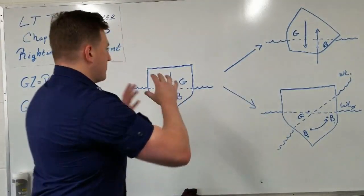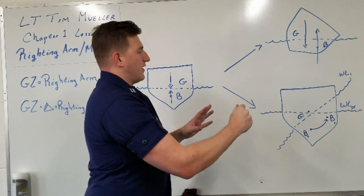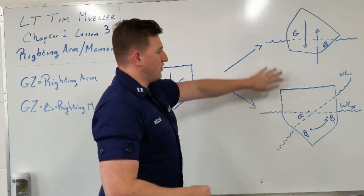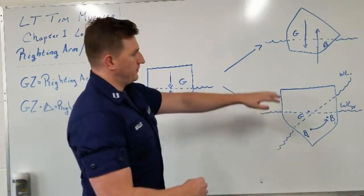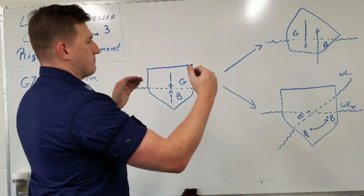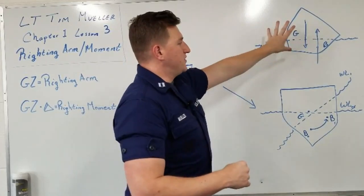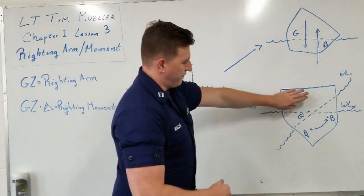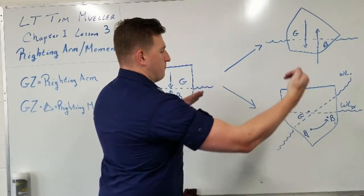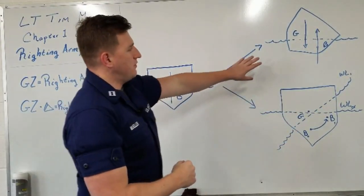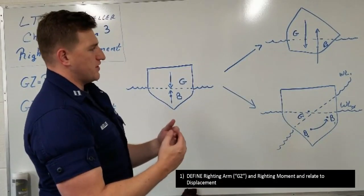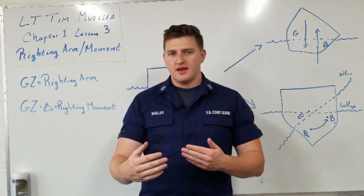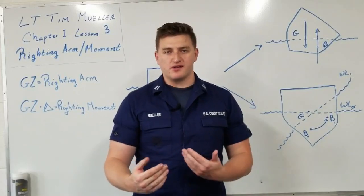Now let's take this vessel and incline it over some small angle of inclination — say five degrees. This is drawn two different ways, as you'll remember from Chapter 0. Here we're looking at it with respect to the waterline, so the waterline stays constant and the ship rotates about the waterline. We know the center of buoyancy is going to swing through an arc at small angles — small angles typically being the range from zero to seven degrees, some hulls being zero to ten, but typically zero to seven to stay safe.